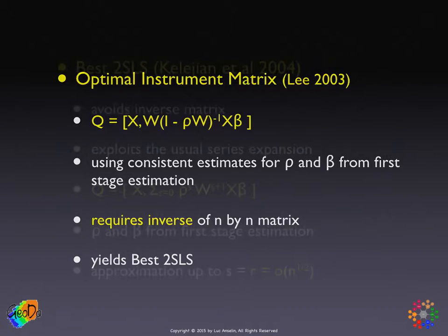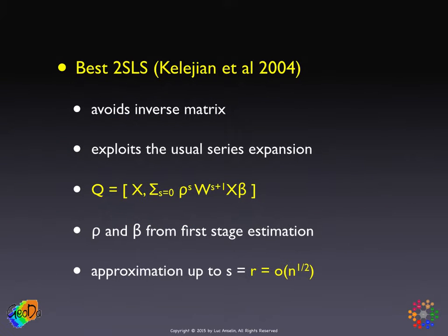There's another equivalent approach suggested in a paper by Kelejian and others that avoids the inverse matrix and instead exploits the series expansion. Rather than carrying out the brute-force inverse, we approximate it by a sum of a series of terms in powers of the autoregressive coefficient ρ and powers of the weights matrix W — that is, increasing spatial lags of the x variables. Again, we do this in two steps: in the first step, we get consistent estimates for ρ and β using the standard approach.